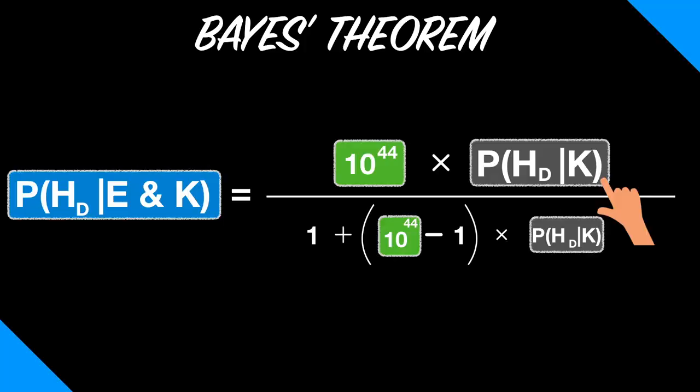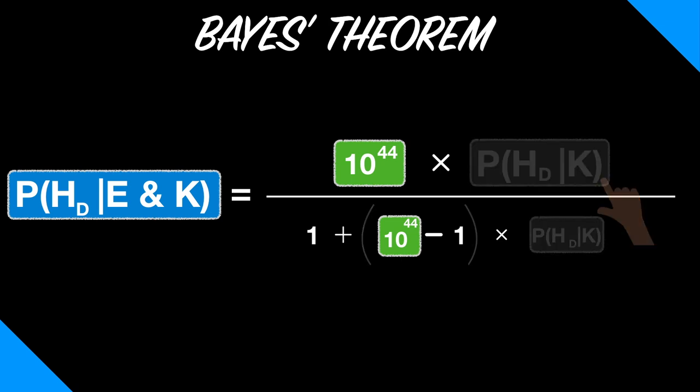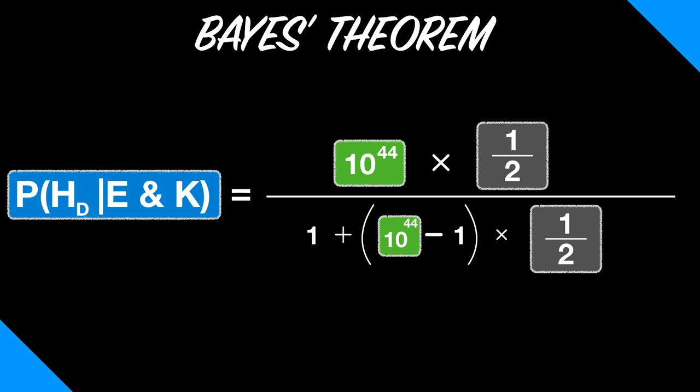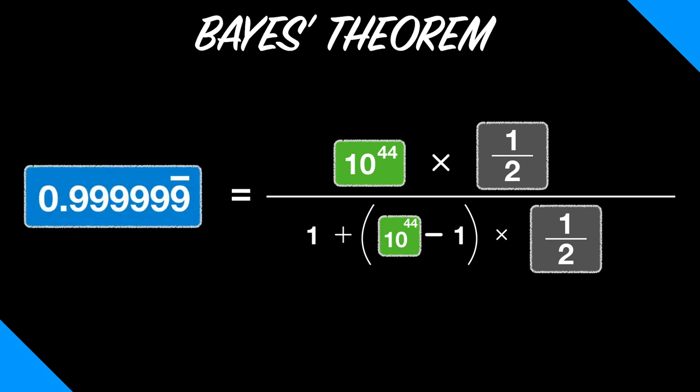Suppose you start out thinking the probability of this design hypothesis is one half, because you think, maybe there's a God, maybe there isn't, I don't know. I'm kind of 50-50. When you do the calculation, you find that after taking the evidence of the cosmological constant into account, the posterior probability of the design hypothesis is well over 0.9999999.